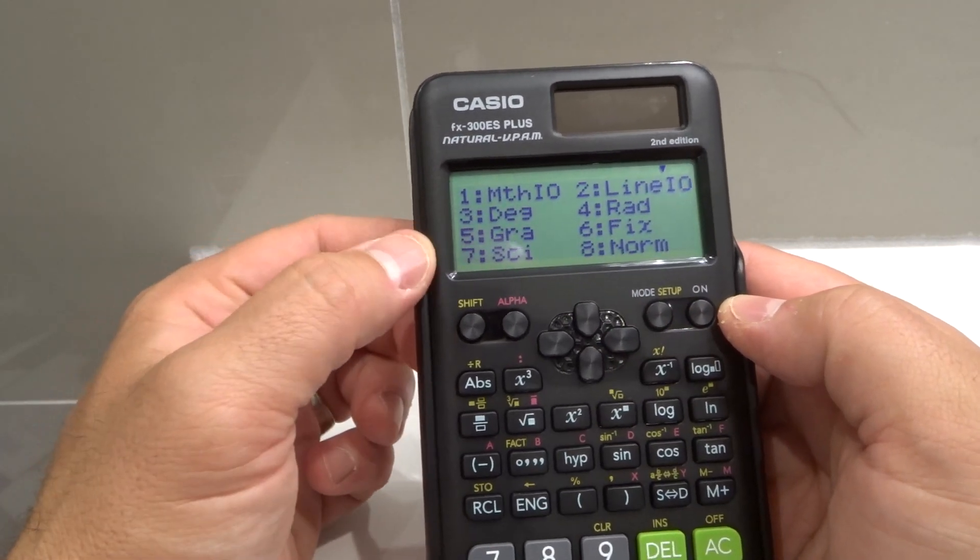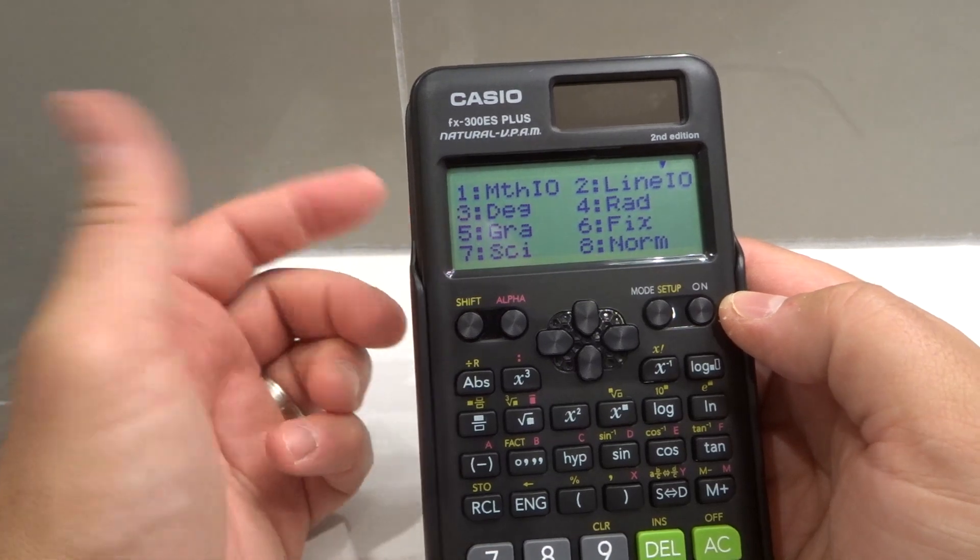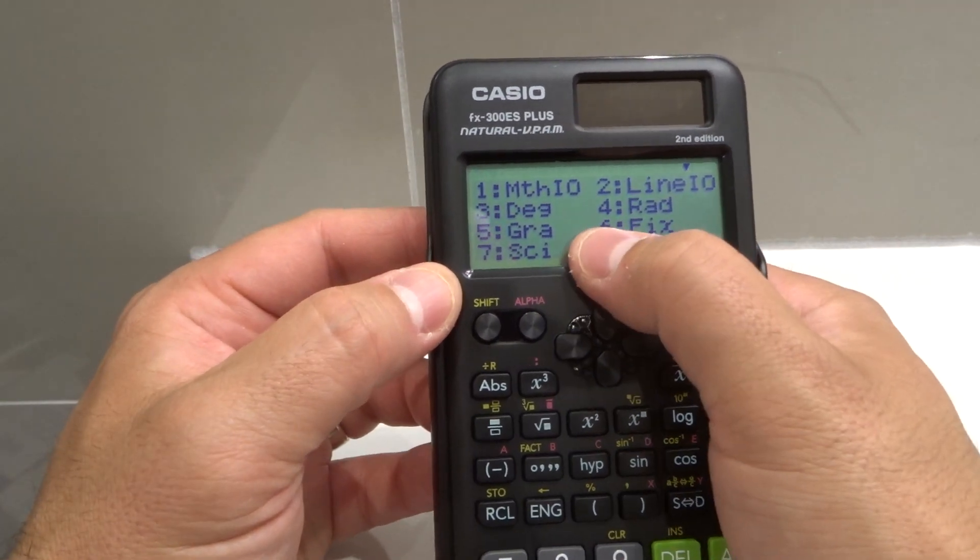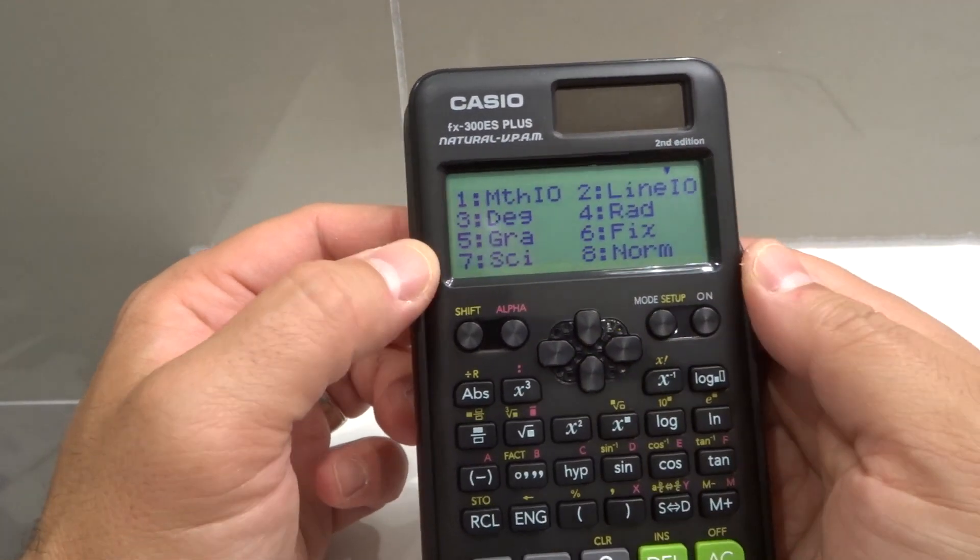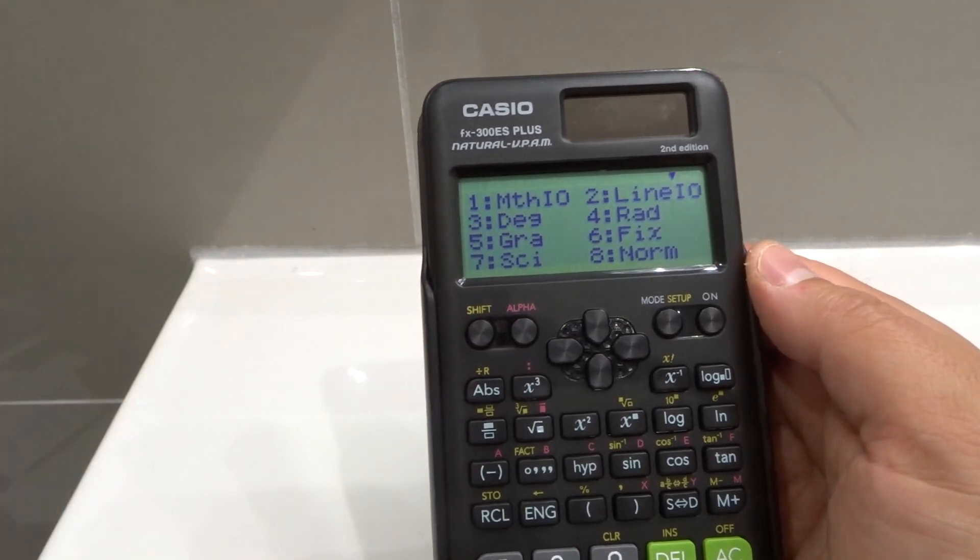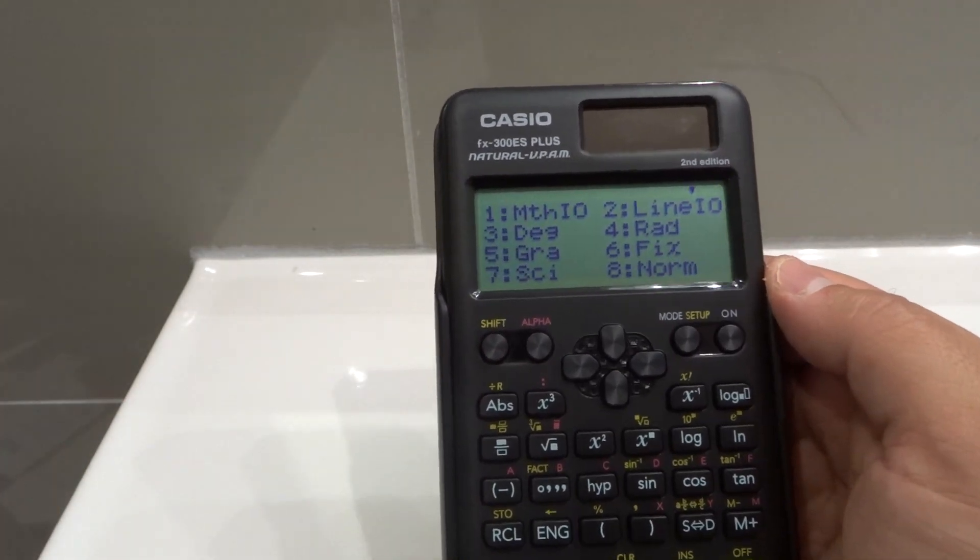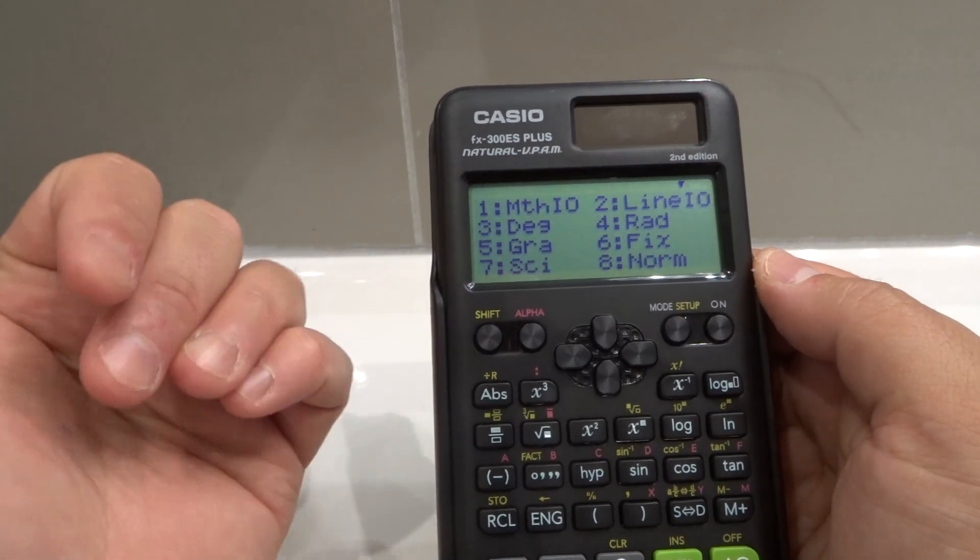Now you're likely going to be looking for one of these options right here. The modes that you might consider needing are six, which is fix on this one. Seven is sci and eight is norm. It kind of depends on what you're doing, but those are usually the modes that you can consider looking at.